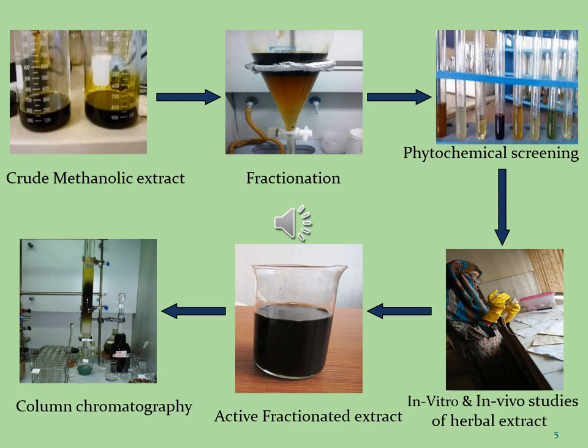This active fraction is further selected for column chromatography. In column chromatography, silica is used as the stationary phase and different combinations of organic solvents are used as the mobile phase. This technique is used for the isolation and separation of organic compounds or phytoconstituents on the basis of the polarity system.